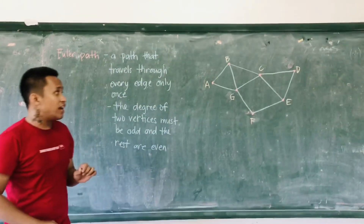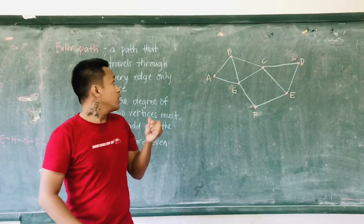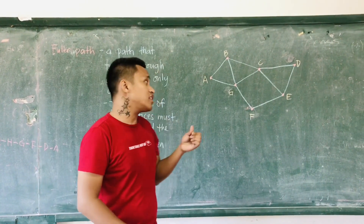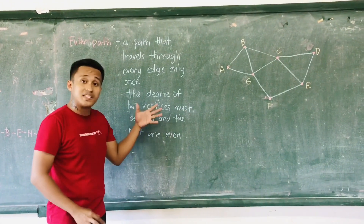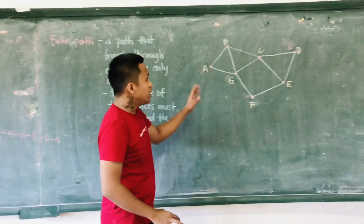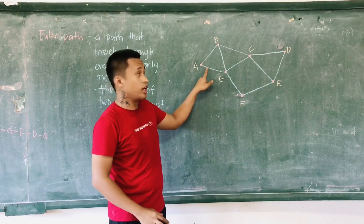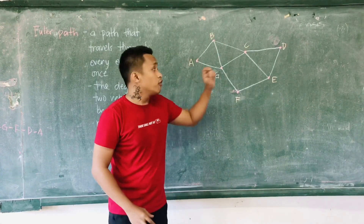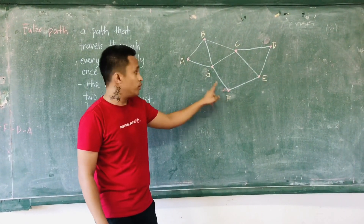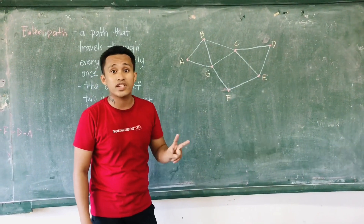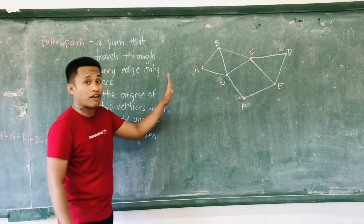Consider a graph with vertices A, B, C, D, E, F, and G. A graph has an Euler path if and only if exactly two vertices have an odd degree and the rest are even. Determining the degrees: A is 2, B is 3, C is 4, D is 2, E is 3, F is 2, and G is 4. Two vertices — B and E — have odd degrees of 3, and the rest are even. Therefore, this graph contains an Euler path.